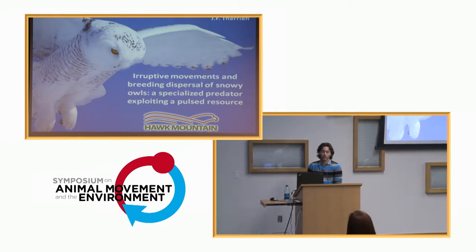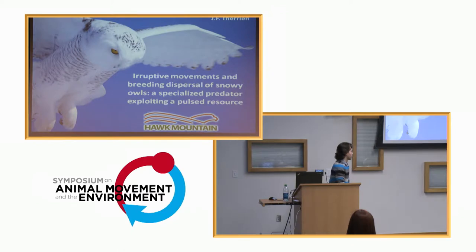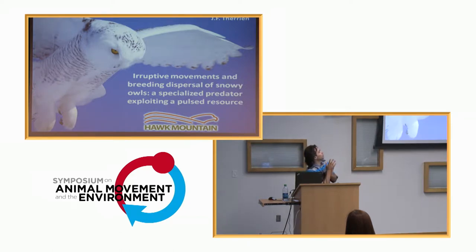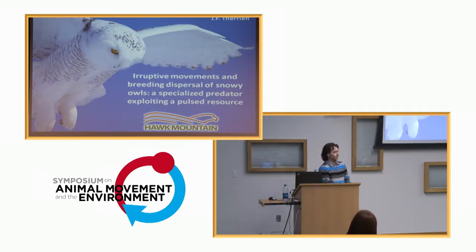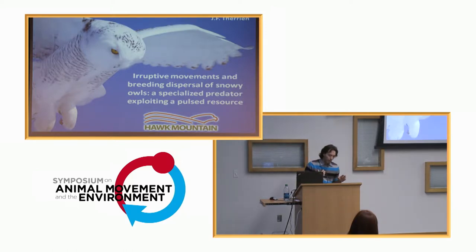Thanks to all of you for coming. I want to thank Roland and all the red jerseys for having this meeting, which is pretty neat. Like I was introduced, I'm J.F. Terry. I'm from Eastern Canada, I'm a French Canadian, so I have a French name and go with just the initials. I now work in the U.S. at Hawk Mountain Sanctuary in Pennsylvania, where we do research on birds of prey. The title is about what I've been doing with state-space modeling.